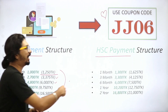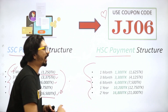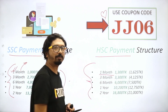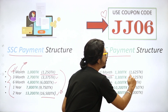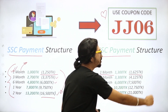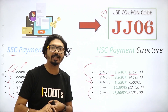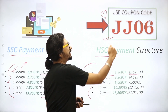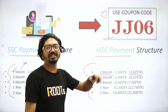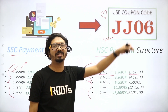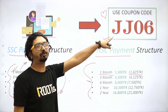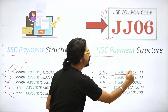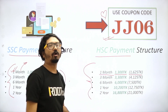For HSC — which is very comprehensive — the subscription fee is 1625. With coupon code JJ06 — JJ stands for Javed Jimmy, and 06 is our batch number — you can get a discount. With that coupon code, the monthly subscription comes down to only 1300.